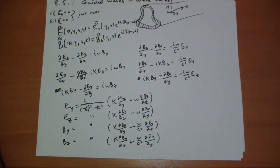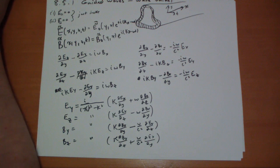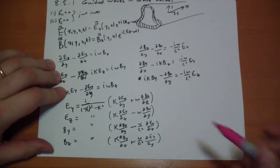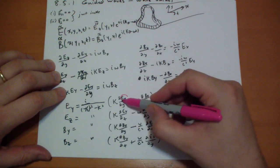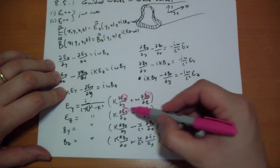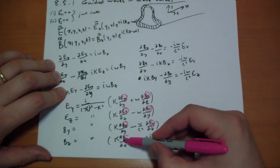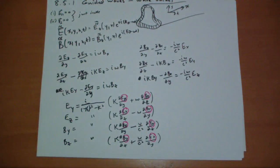When you put the equations in this format, you notice a curious pattern: the Y and Z components are determined only by the X components. So if we can just find the X components of B and E, we can quickly calculate everything else.